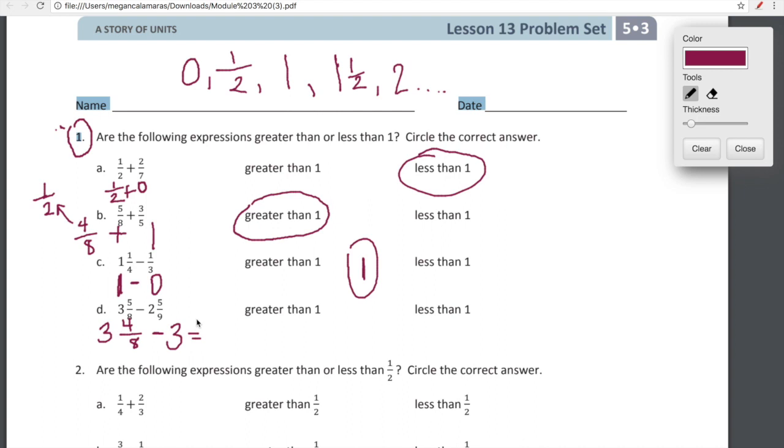Let's think about three and four eighths minus three. Three minus three is zero. Oh gosh, she's calling me. I don't know who's calling me. Sorry guys. Three and four eighths minus three is just simply four eighths, which you guys know is an equivalent fraction to one half. So we're going to say this difference here is going to be less than one. Okay, so we'll look at a couple more examples and then we'll kind of just call it a day.